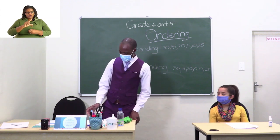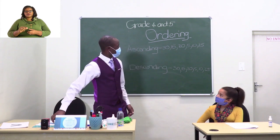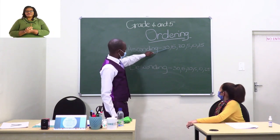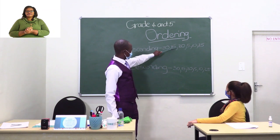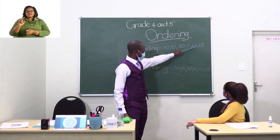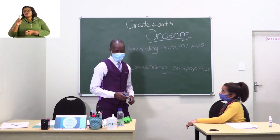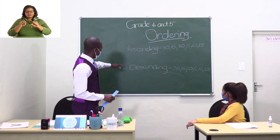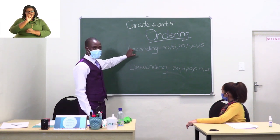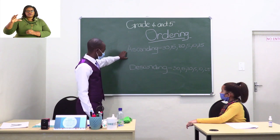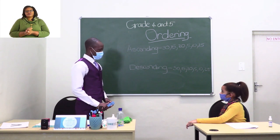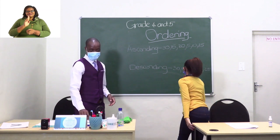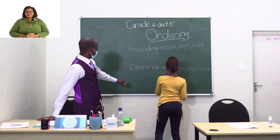Let us look at the numbers on the chalkboard. We have 13, 15, 25, 5, 10, and 25. We are supposed to arrange those numbers in ascending order, meaning we are going to start from the smallest to the biggest. Chanel, can you come and arrange these numbers in ascending order?